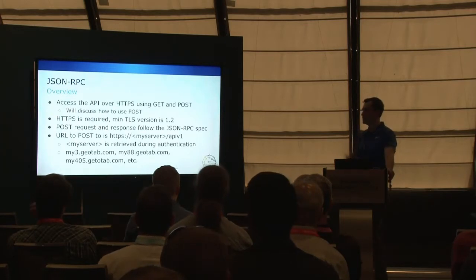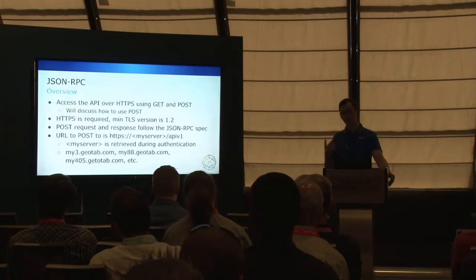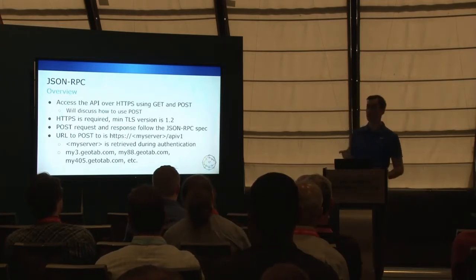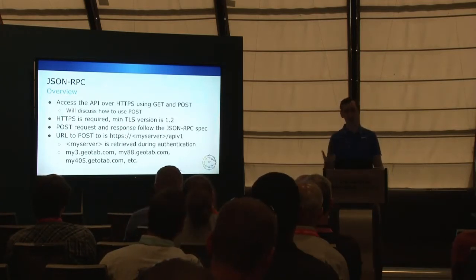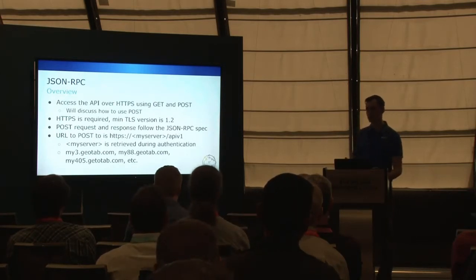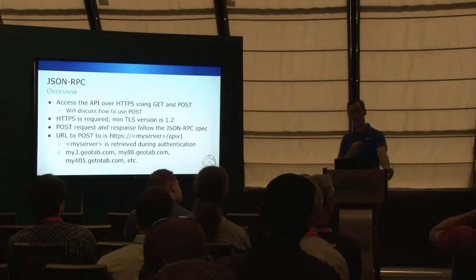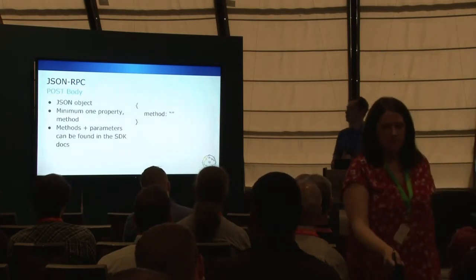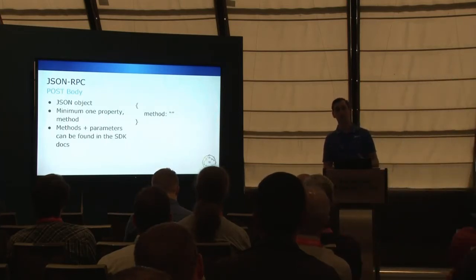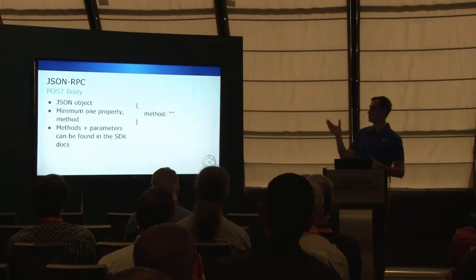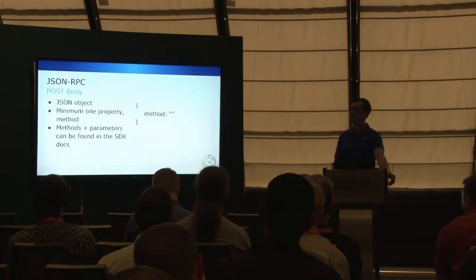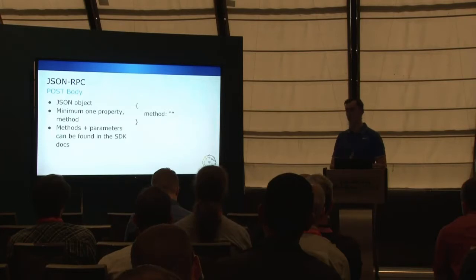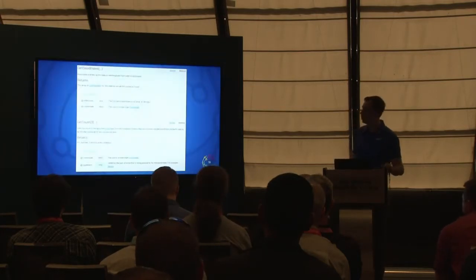Peter mentioned in an earlier session that we're working to hide everything behind a single URL — in future it will just be my.geotab.com/apiv1. For the POST body, the minimum is a JSON object with a single property called 'method', which is a string with the name of the method you want to call. All methods and their parameters are documented at my.geotab.com/SDK or now available on GitHub. For example, the method 'GetCountOf' returns the count of an entity in the database and takes two parameters: credentials (an object) and typeName (a string).